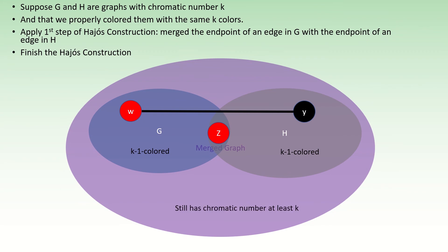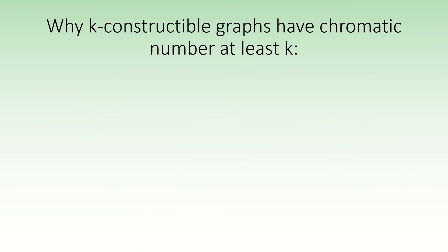Essentially, the reason the Hayosh construction does not decrease chromatic number is that final step — linking the two former endpoints. And that is why k-constructible graphs cannot be properly colored with less than k colors.